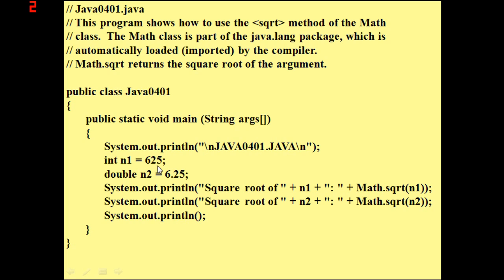It starts off with a simple println statement which is just going to show the class name. We created an integer called n1 for number 1 and set it equal to 625, and then we created a double — which is a decimal number — n2, and set it equal to 6.25. Then we do System.out.println with 'square root of' and then a plus. Basically, the plus lets you type an absolute string like 'square root of' and then add a variable, another string, or even call methods.